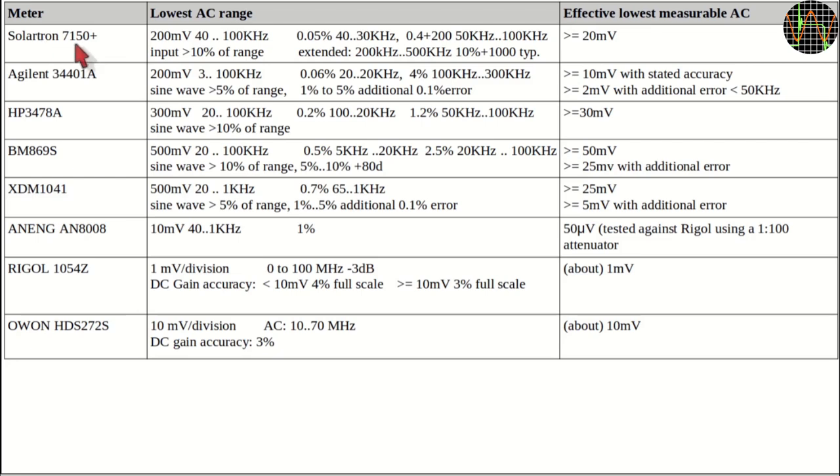Below that, your meter is just telling you nonsense. Hence, the Solartron 7150 Plus with its 200mV lowest AC range needs to see at least 20 mV, and if you go faster than 100 kHz, you pay with extra errors.